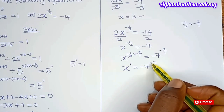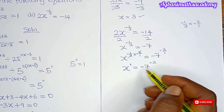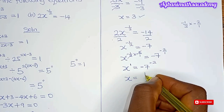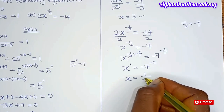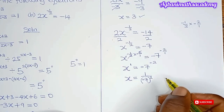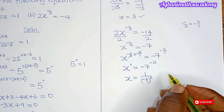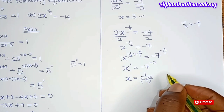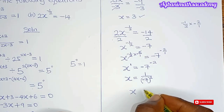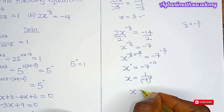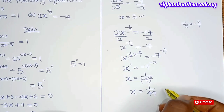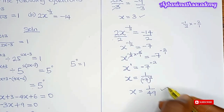Next, we eliminate the negative exponent by writing the inverse. So x equals 1 all over minus 7 to the power of 2. Now, minus 7 to the power of 2 means minus 7 multiplied by minus 7. Minus times minus gives plus, so minus 7 multiplied by minus 7 equals positive 49. Therefore our value of x is 1 all over 49.